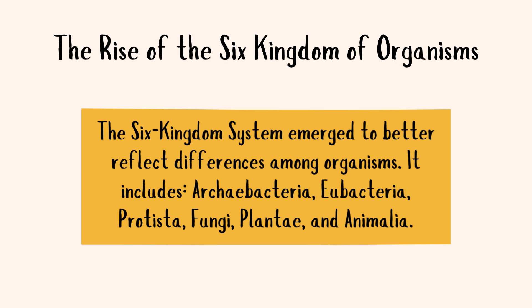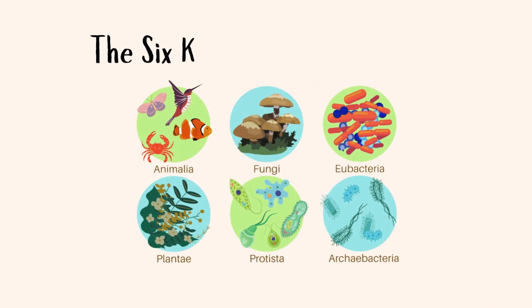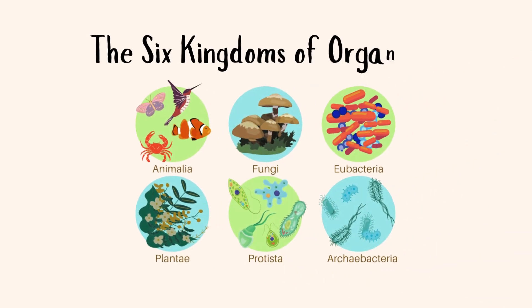The Six Kingdom System includes archaebacteria, eubacteria, protista, fungi, plantae, and animalia. Each kingdom represents a unique way of life. Let's take a closer look at each of the six kingdoms and what makes them special.